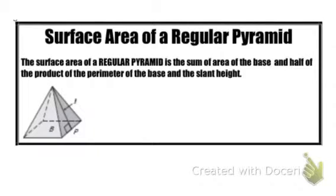The surface area of a regular pyramid is the sum of the area of the base and half of the product of the perimeter of the base and the slant height.